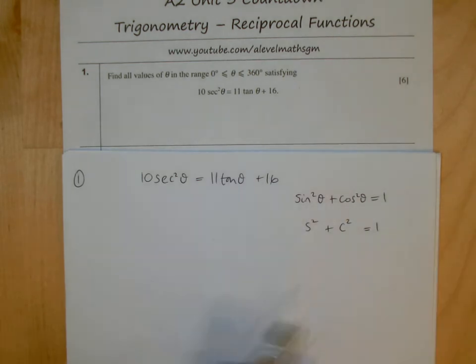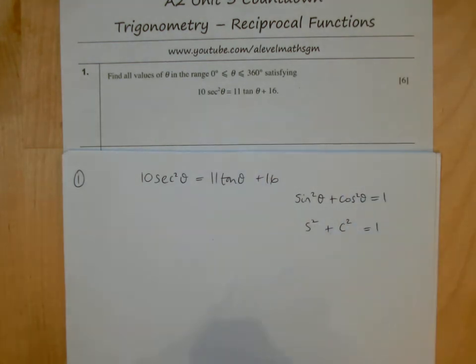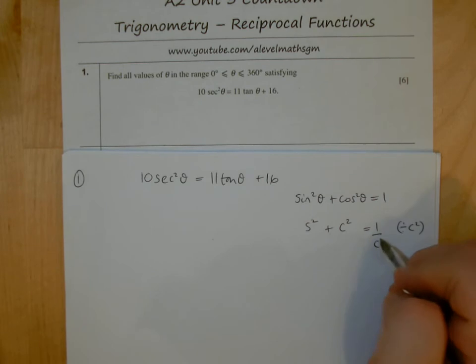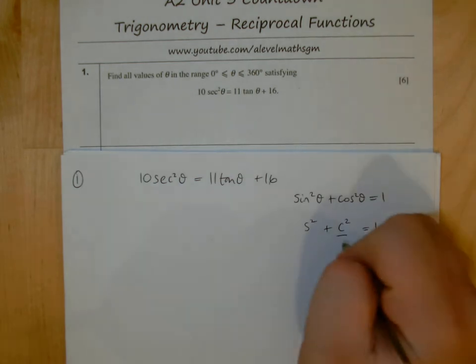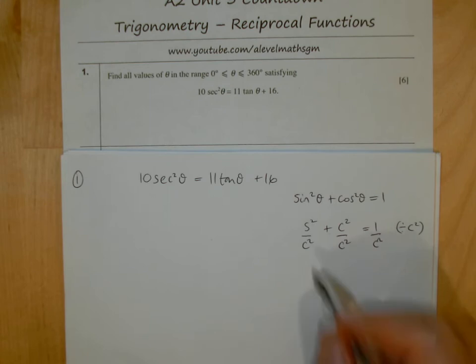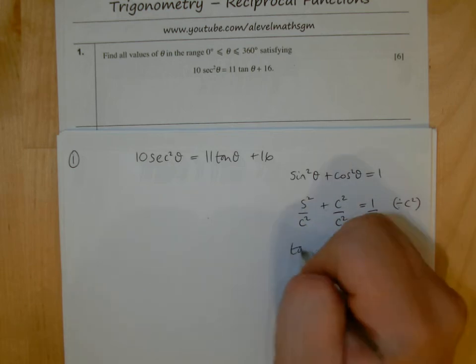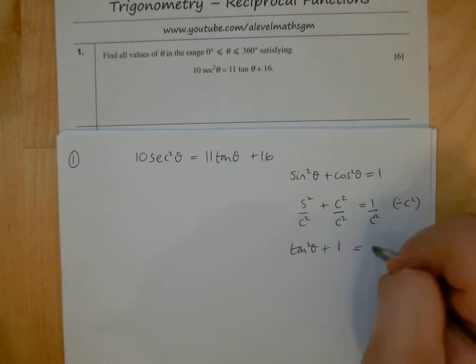You'll ask yourself, what do I need to divide by here? Well, because I want sec²θ, I'm going to need to divide by cos²θ, because if I divide by cos²θ on this side, 1 ÷ cos²θ is sec²θ, since 1/cos is sec. So 1/cos²θ is sec²θ. You divide everything by cos²θ. Then you recognize that sin/cos is tan, so sin²θ/cos²θ is tan²θ. Cos²θ/cos²θ is 1, and 1/cos²θ is sec²θ.